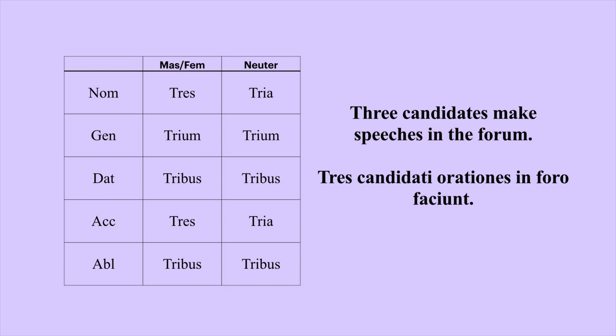Three actually declines just like omnis/omnia — the plural of omnis — so it's nothing we haven't seen before. The nominative masculine/feminine is tres, nominative neuter is tria. The genitive is trium for all genders. The dative and ablative are tribus. The accusative masculine/feminine is tres, neuter is tria.